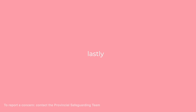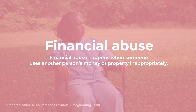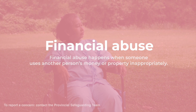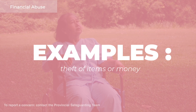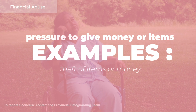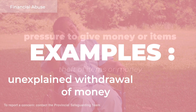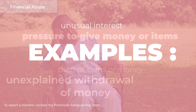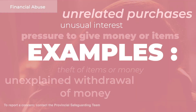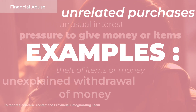And lastly, financial abuse. Financial abuse happens when someone uses another person's money or property inappropriately. Examples of financial abuse are theft of items or money, pressure to give money or items, unexplained withdrawal of money, unusual interest from a third party in financial matters, or purchases unrelated to the individual's needs such as a car or holiday.